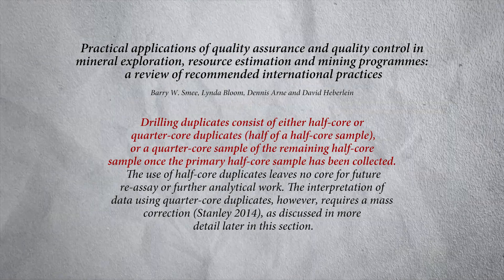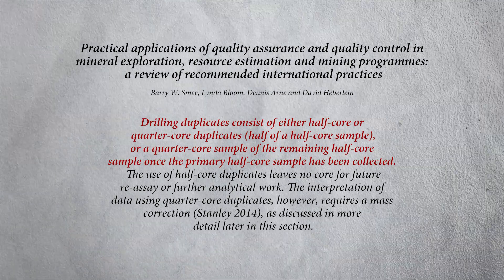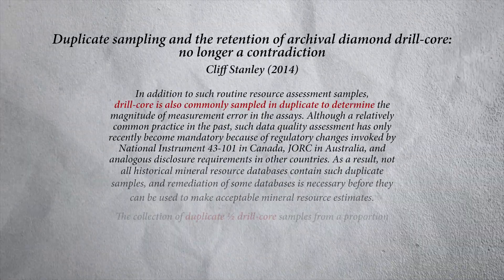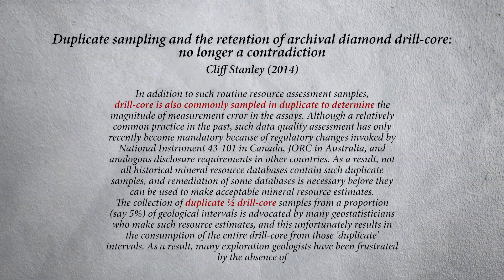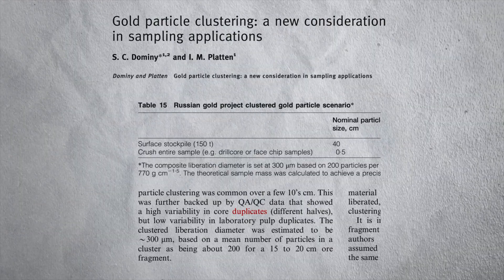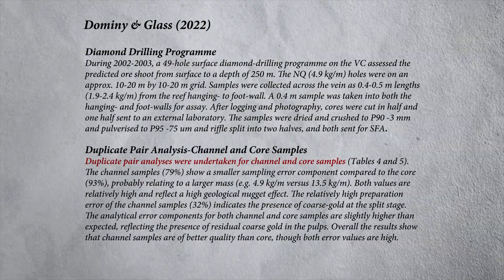Here is another paper by Barry Smee et al. - four authors - a key paper summarizing all the best practices in quality assurance and quality control, and it's only just come out. It actually says: drilling duplicates consist of either half-core or quarter-core duplicates, half of half-core sample or a quarter-core sample of the remaining half-core sample once the primary half-core sample has been collected. We can also look at the papers by Cliff Stanley - he talks about core duplicates and has a lot to say about the calculation of precision. Then there are papers by Simon Dominey and colleagues about core duplicates. It's all core duplicates in almost every publication that you see.